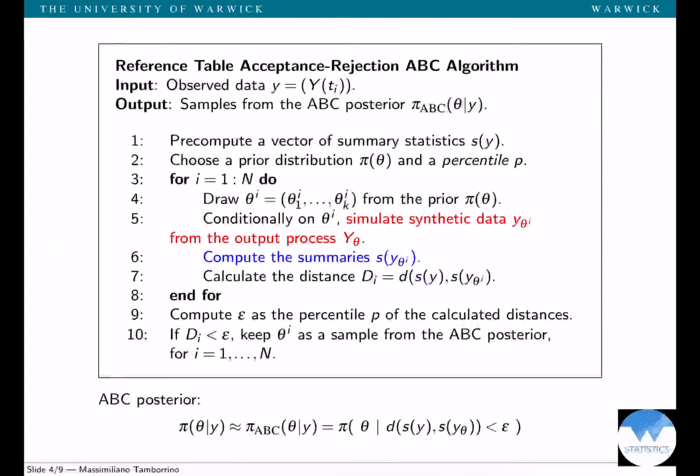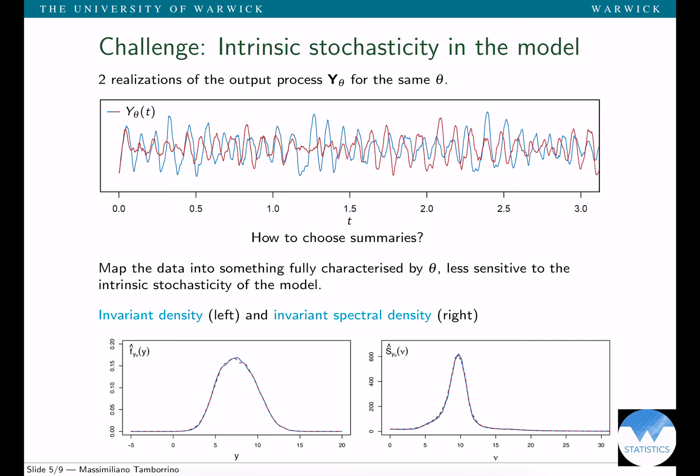When we deal with stochastic processes, there are two challenges that immediately arise. The first is the intrinsic stochasticity in the model. Whenever we generate two different trajectories from the model from the same parameter value, we have two different realizations. This is illustrated here in blue and red curves. The natural question is: how do we choose summaries such that this randomness, this stochasticity, is minimized and we get rid of that?